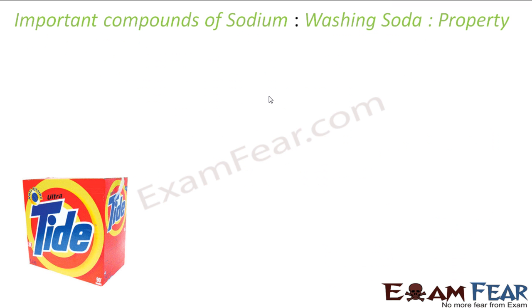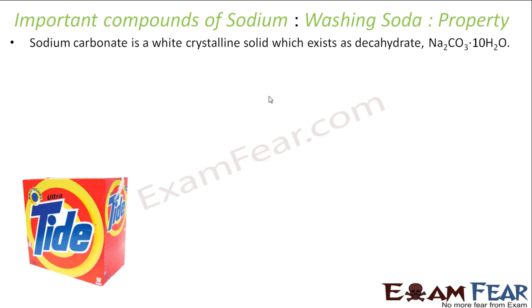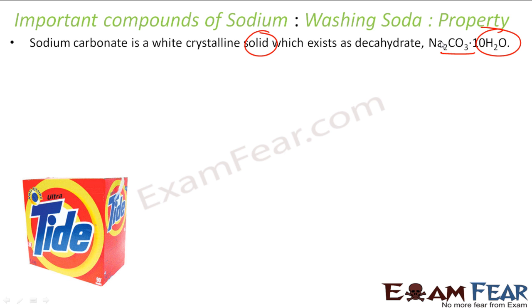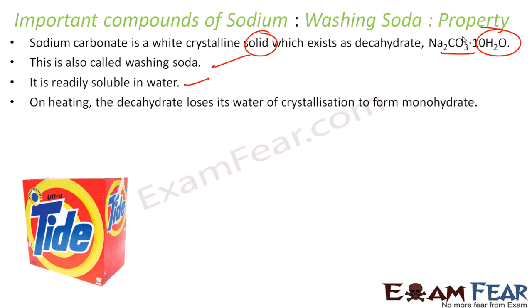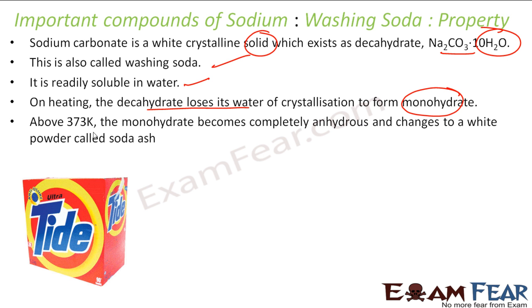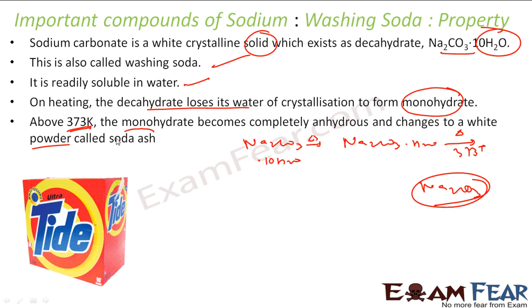Washing soda is a white crystalline solid which exists as the decahydrate — meaning it has 10 water molecules. It is very soluble in water. If you heat washing soda, the water molecules leave and it becomes monohydrated. If you heat above 373K, even the single water molecule is lost and you get anhydrous Na2CO3, which is called soda ash.